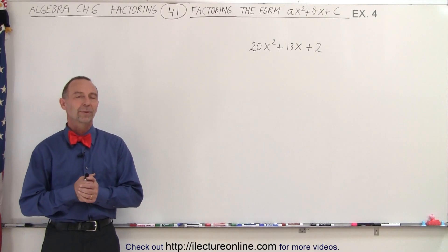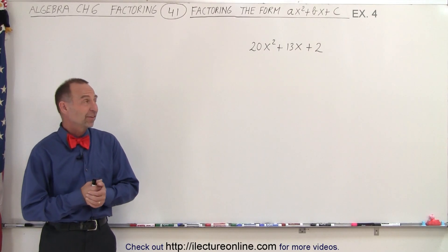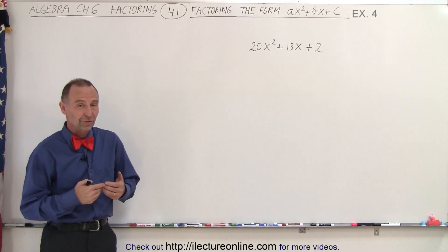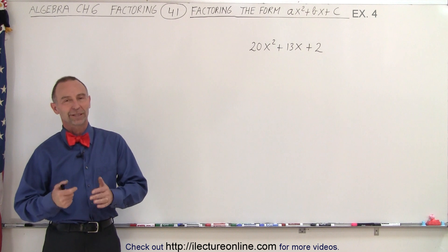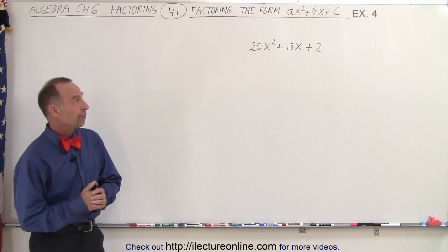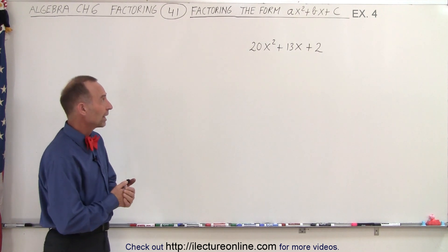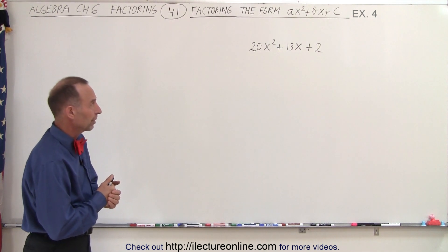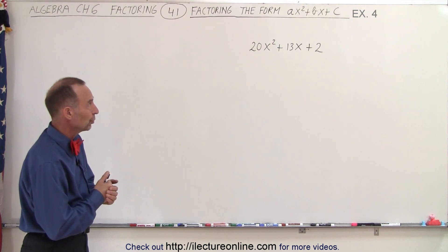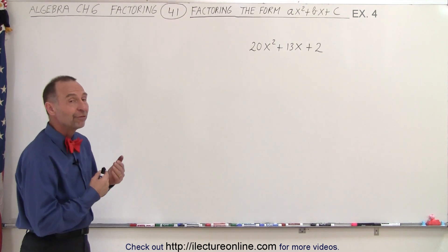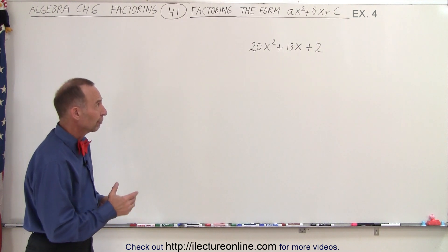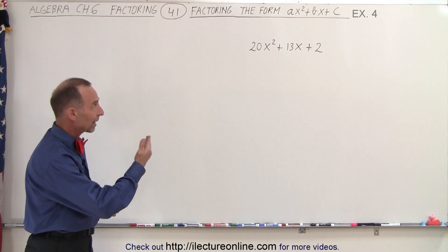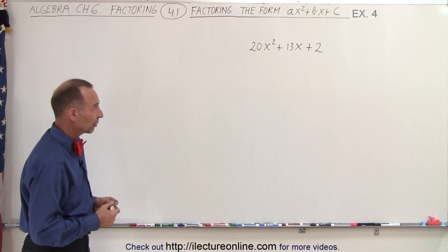Welcome to Electro Online. Since this is such a difficult type of problem, let's do at least one more example. 20x squared plus 13x plus 2 — how do we factor that? Again, the form is the ax squared plus bx plus c form.